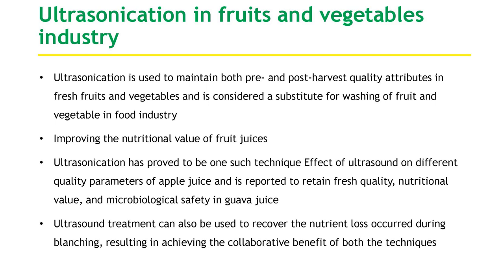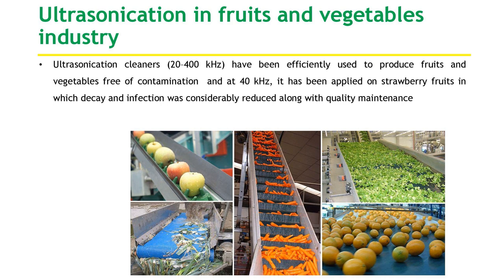In the fruits and vegetable industry, ultrasonication is used to maintain both pre- and post-harvest quality attributes in fresh fruits and vegetables and is considered a substitute for washing in the food industry. Ultrasound treatment can also be used to recover nutrient losses occurring during blanching, achieving collaborative benefits of both techniques. Ultrasonication cleaners have been efficiently used to produce fruits and vegetables free of contamination at 40 kHz, and have been applied on strawberry fruits where decay and infection are considerably reduced along with quality maintenance.